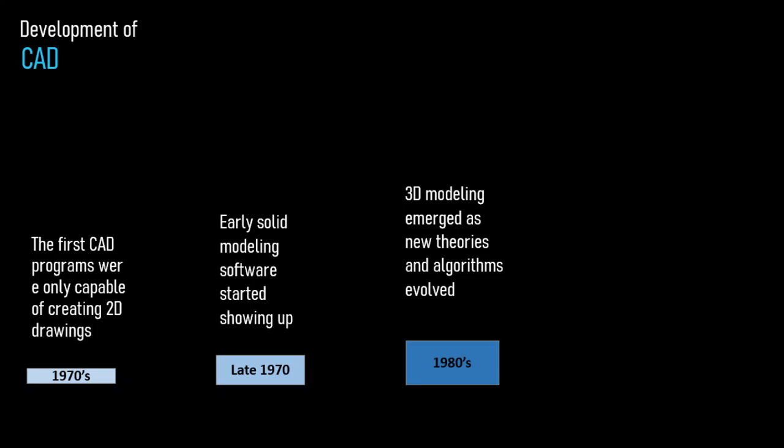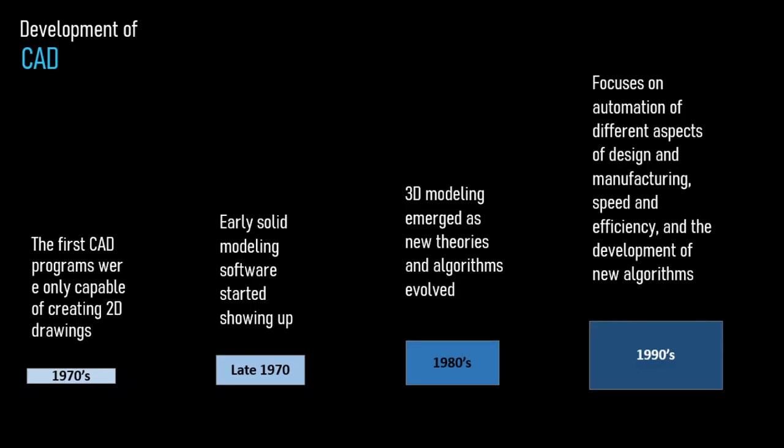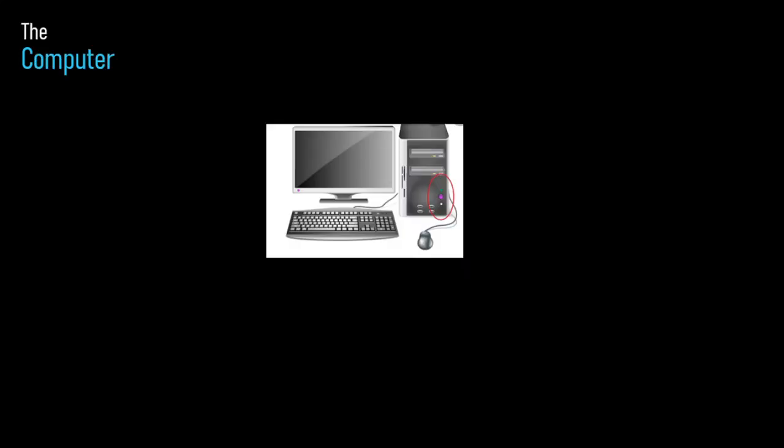Looking at the development of CAD over time: in the 1970s, the first CAD programs were only capable of creating 2D drawings. In the late 1970s, early solid modeling software started to appear, following the contributions of Ivan Sutherland. In the 1980s, 3D modeling emerged as new theories and algorithms evolved. In the 1990s, CAD focused on automation of different aspects of design and manufacturing, increasing speed and efficiency through the development of new algorithms.